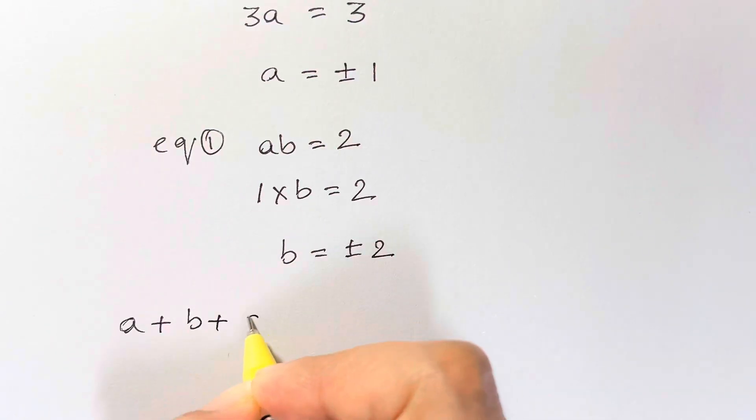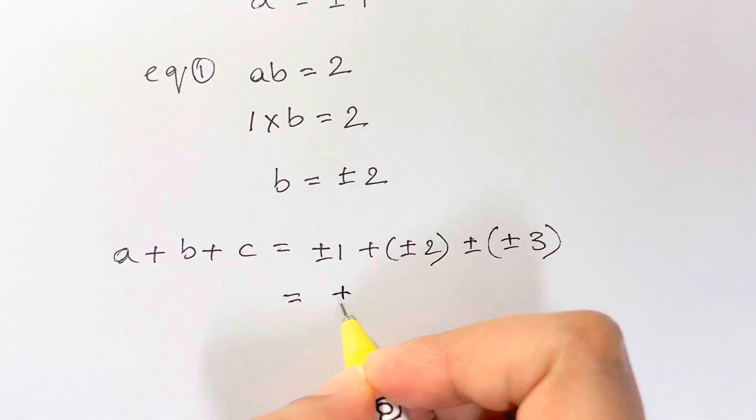Now we need to find the value of A plus B plus C. So that is plus or minus 1 plus plus or minus 2 plus plus or minus 3. So that's equal to plus or minus 2 plus 3 plus 1 is 6. That's your answer.